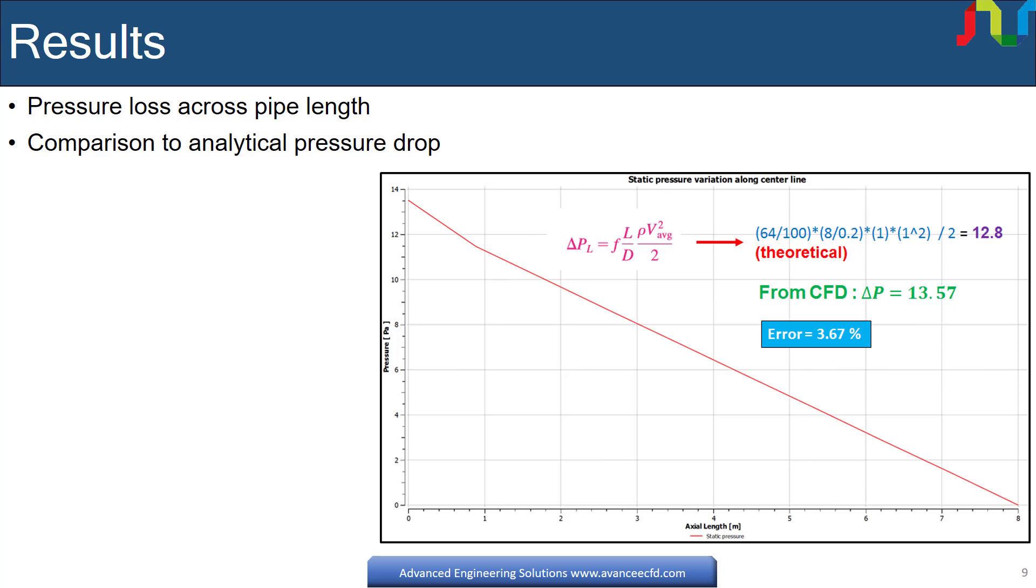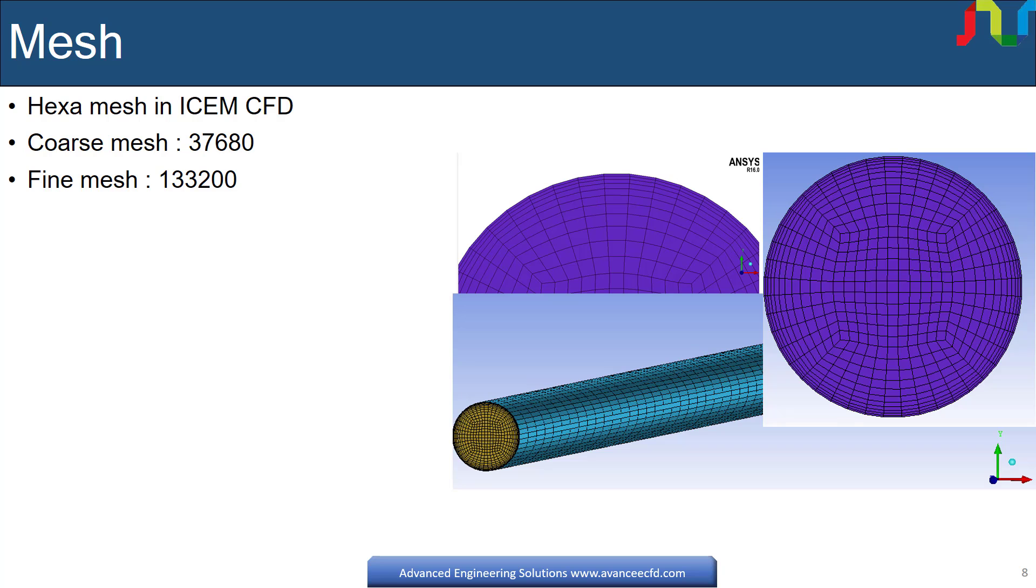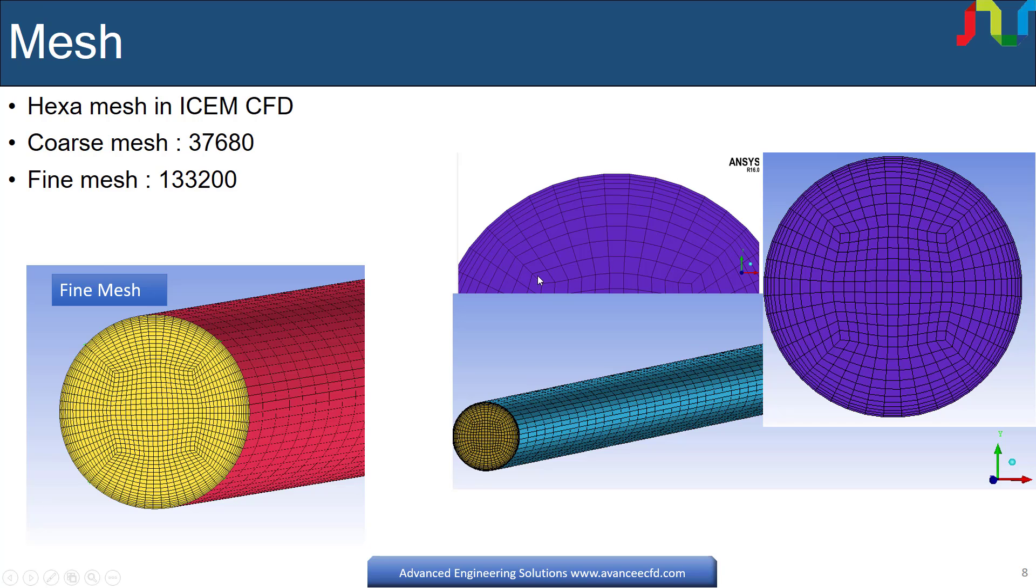Mesh was generated in ICEM CFD hexa. It is multi-block structured mesh. Mesh is graded towards the wall to properly resolve the velocity gradients at the wall. O-grid is created to get the better control of mesh and have better quality. See the ICEM CFD section which will guide you how to get this type of mesh in ICEM CFD.